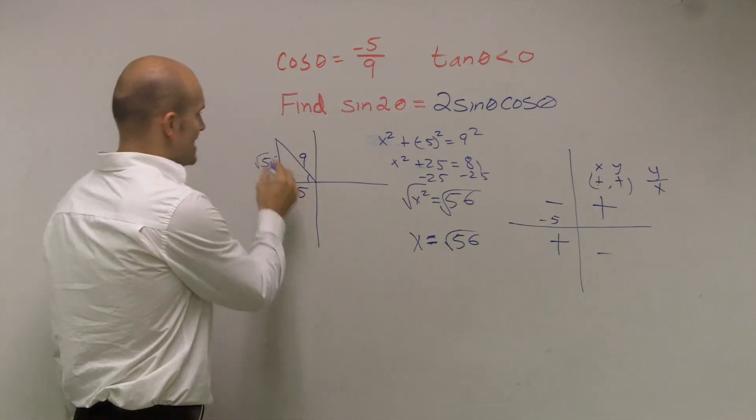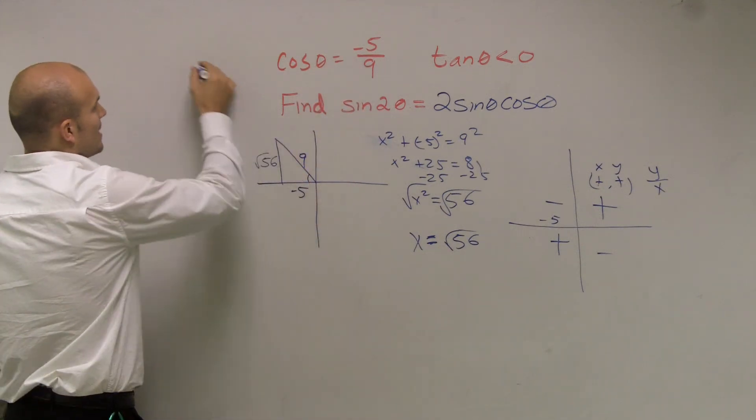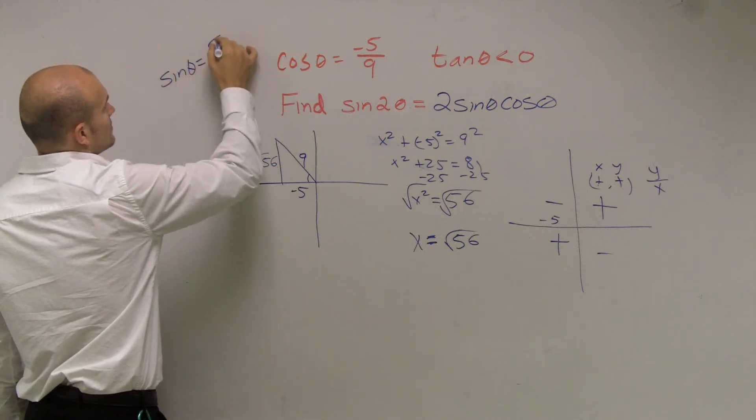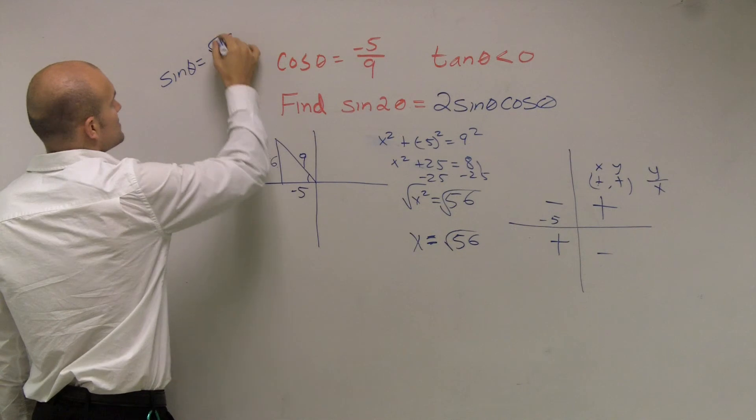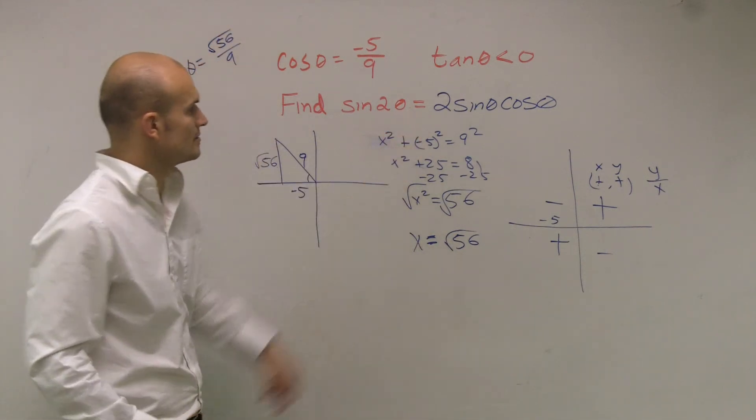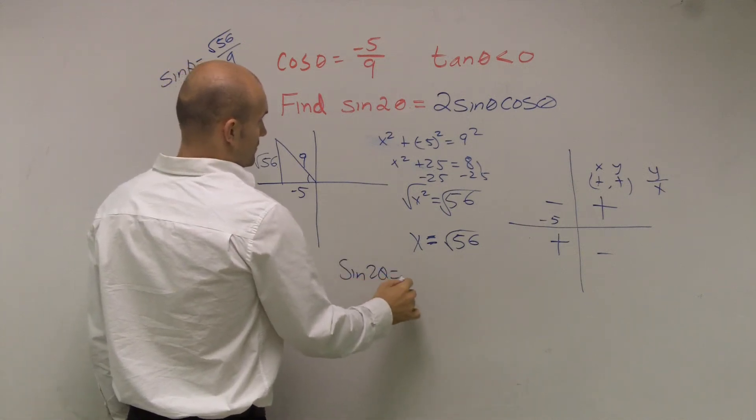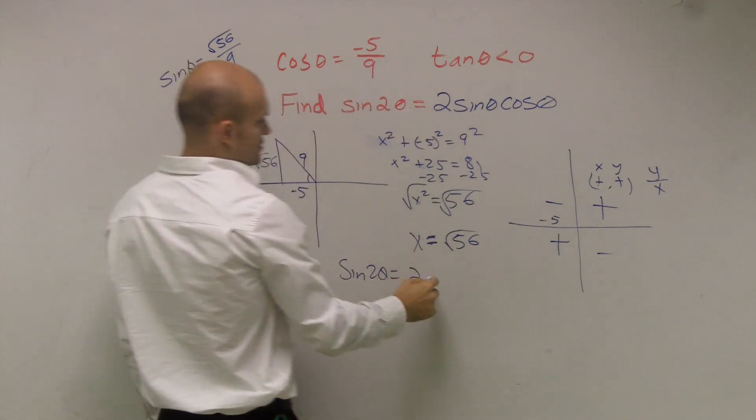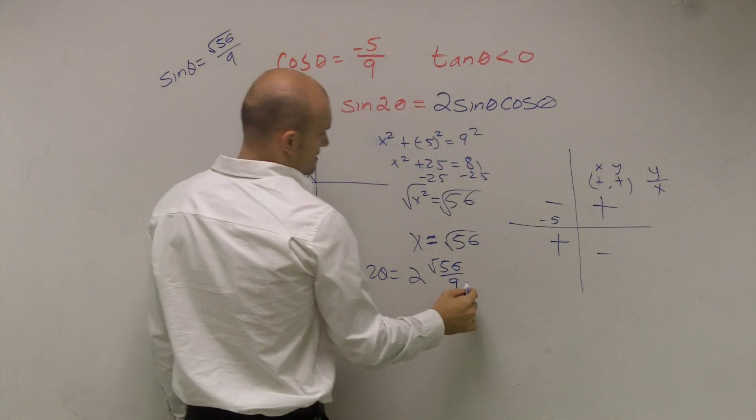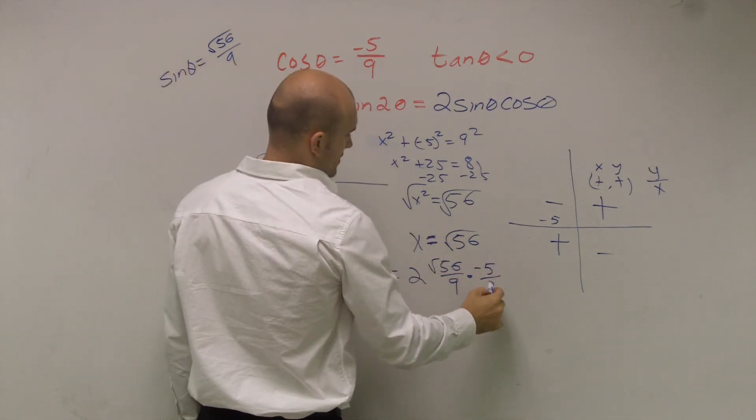So therefore, sine of theta... So cosine of theta is negative 5 over 9, right? Adjacent over hypotenuse. Sine of theta equals opposite over hypotenuse, which is radical 56 over 9. Make sense? So now, all we've got to do is just plug them in. So sine of 2 theta equals 2 times sine of theta, which is radical 56 over 9, times cosine of theta, which is negative 5 over 9.